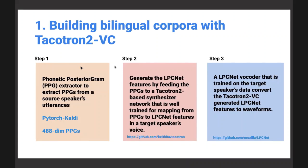There are three distinct steps. First, they feed these sentences and extract features called PPG - Phonetic Posterior Gram features. Per time window of the speech signal, 488 numbers are generated. These represent the speech signal's content part alone - these features are kind of language-independent as well as speaker-independent.